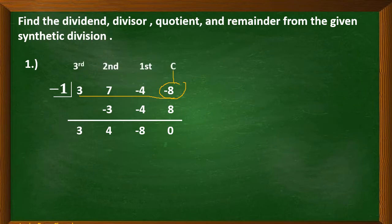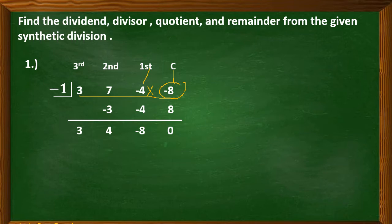Negative 4 is the first degree term, so there will be a variable x beside negative 4. Since the degree is 1, we are not going to write 1 as the exponent — it is already understood that the exponent is 1. After the first, we have the second degree term, so the exponent of x here is 2.